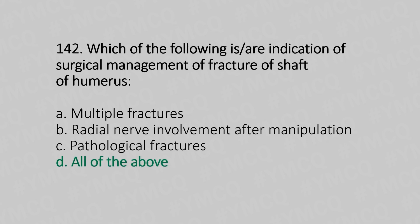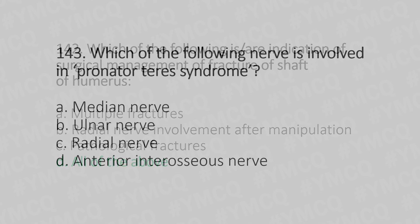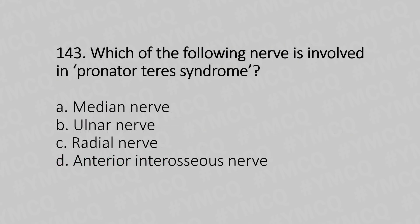Option D: all of the above. Now let's move to question number 143. Which of the following nerve is involved in pronator teres syndrome? Option A: median nerve. Option B: ulnar nerve. Option C: radial nerve. Option D: anterior interosseous nerve. And the answer is...